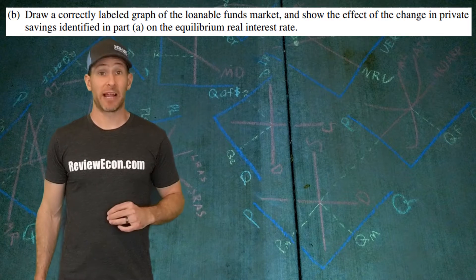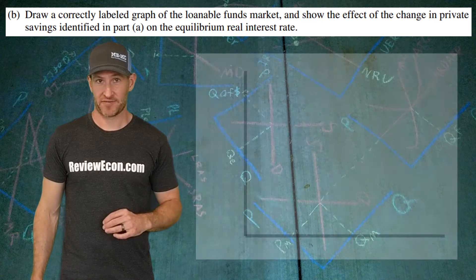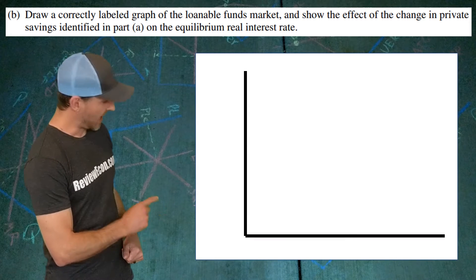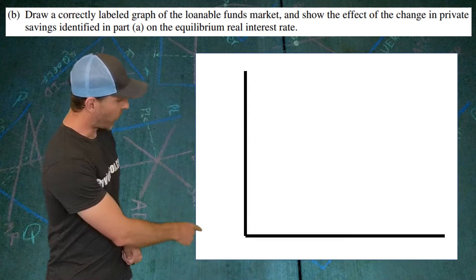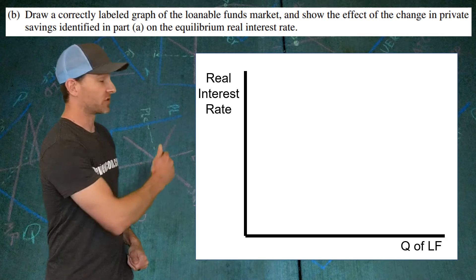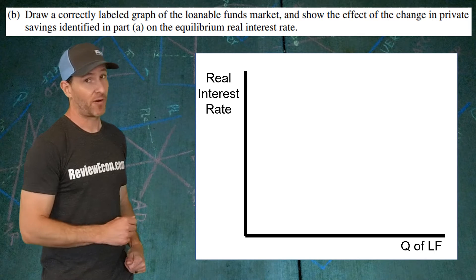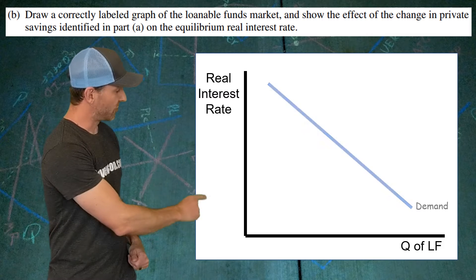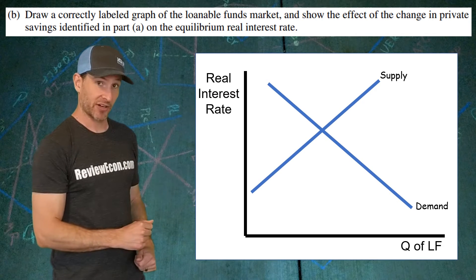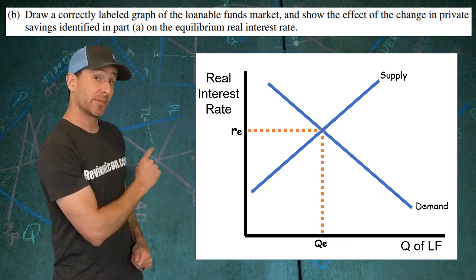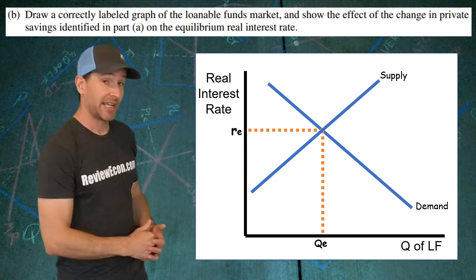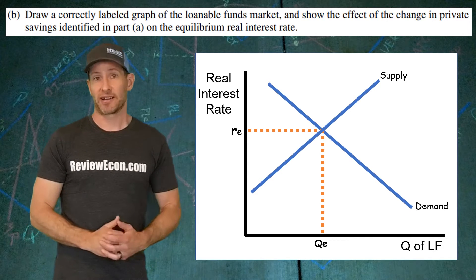For part B we have to draw a loanable funds market graph. Start off by drawing your axes. Label them quantity of loanable funds on the x-axis and the real interest rate on the y-axis. Have a downward sloping demand curve and an upward sloping supply curve.